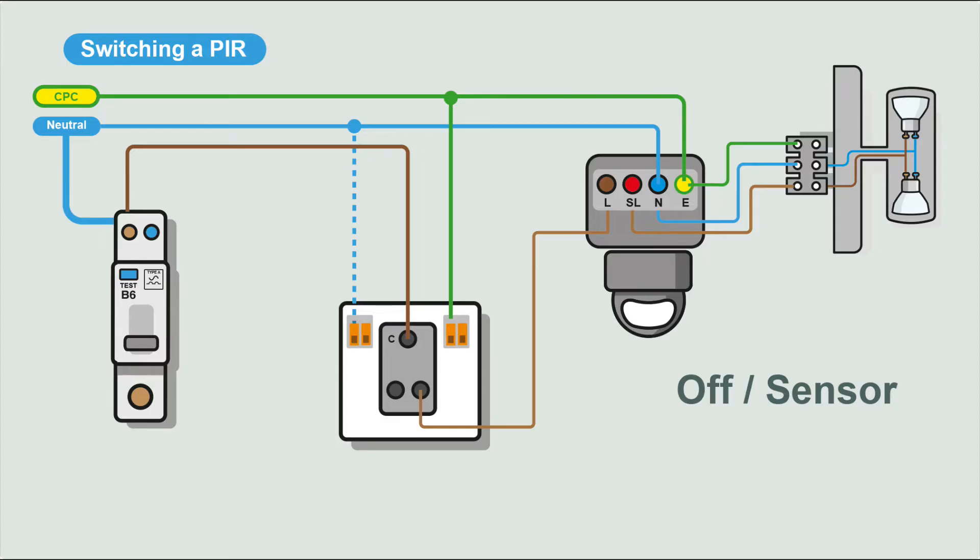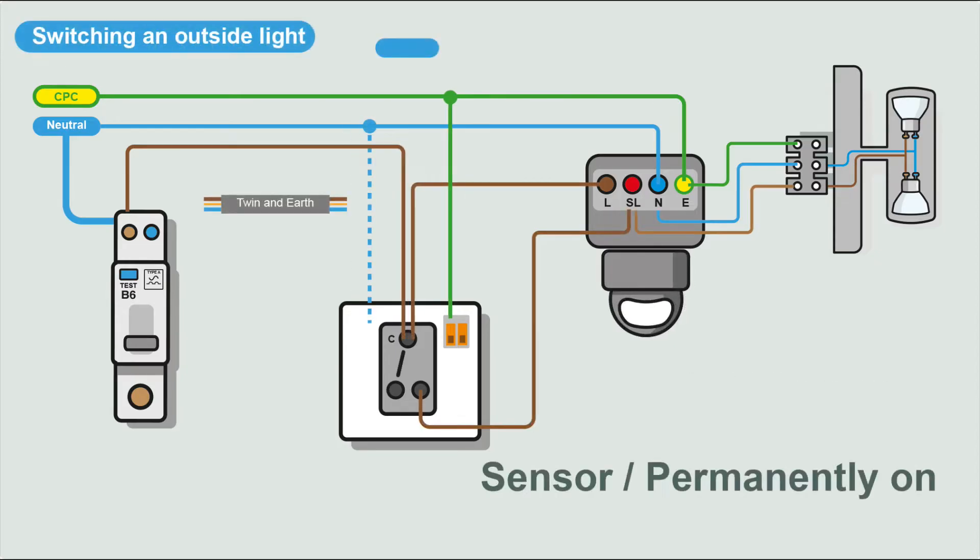Sometimes it's nice to have that functionality of being able to switch the light on permanently. In this example, a feed comes in on the common and leaves the common to the permanent live in the PIR. From L1, we take a feed to switch live in the PIR, which then energizes the light. So in the off position, the light is operated just by the sensor. In the on position, the light is permanently on. The issue with this setup though is you can't actually switch the whole thing off. It's either on sensor or it's permanently on.